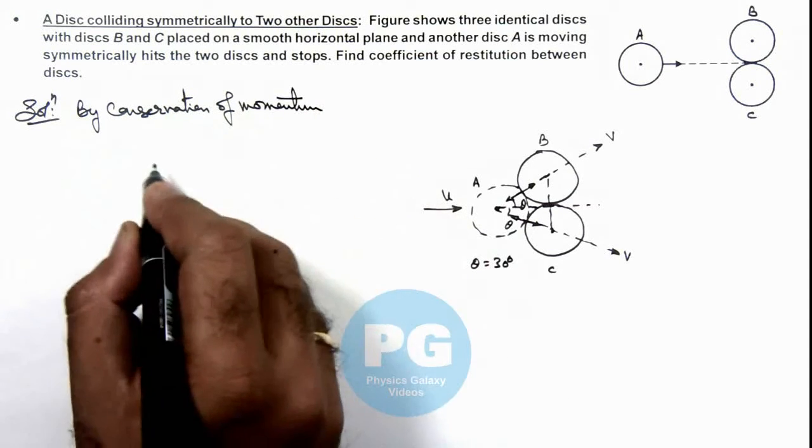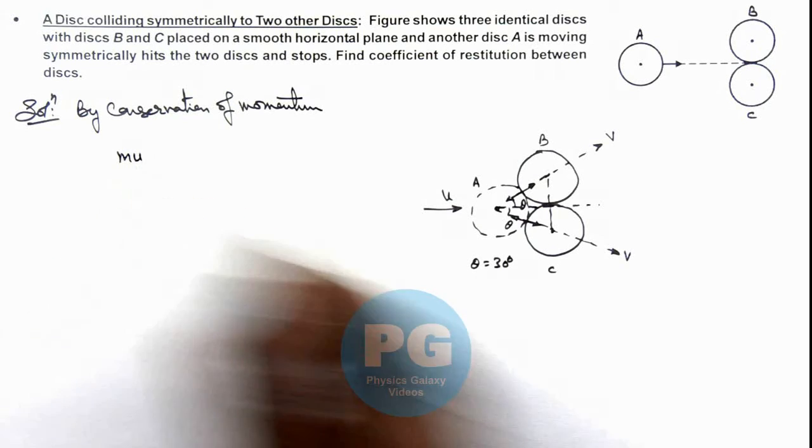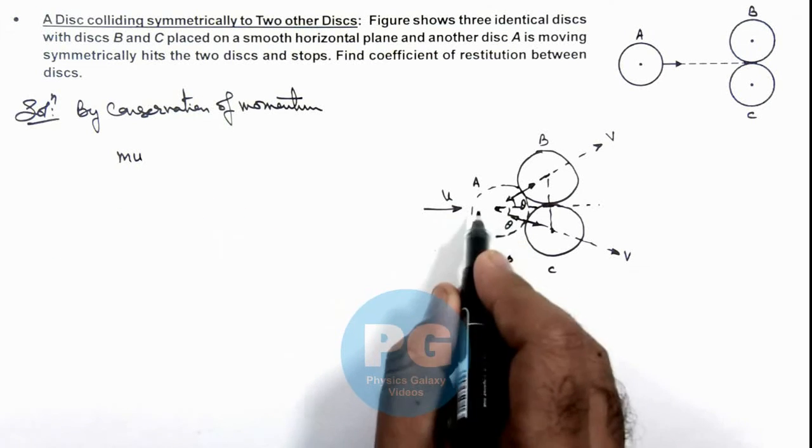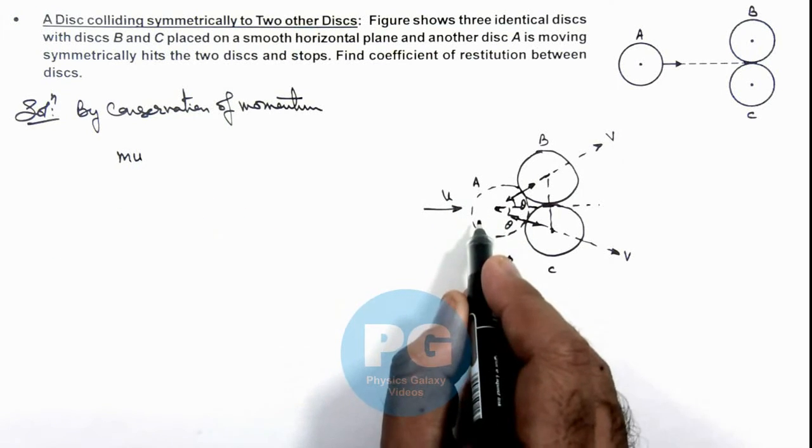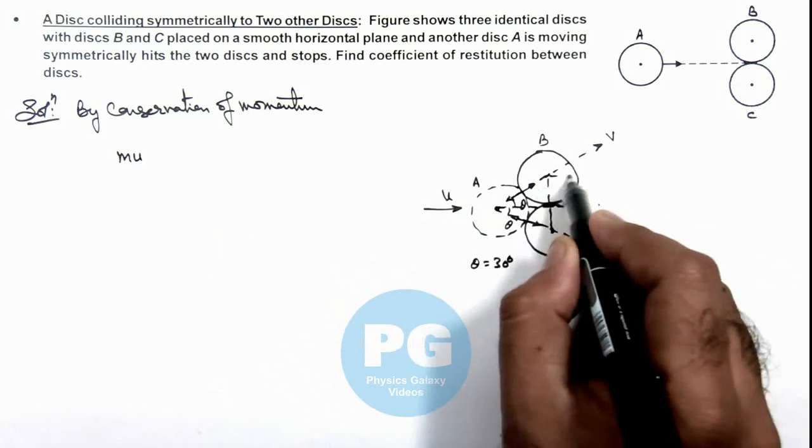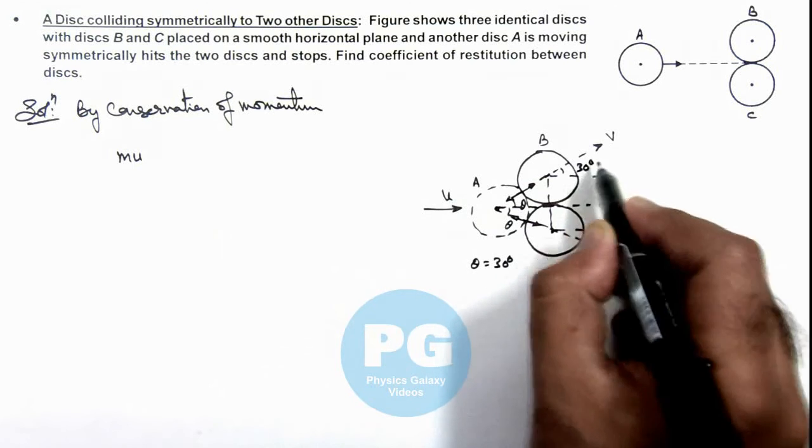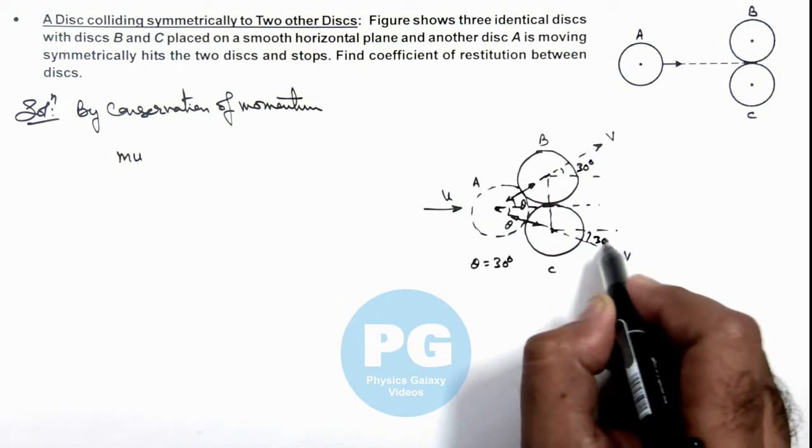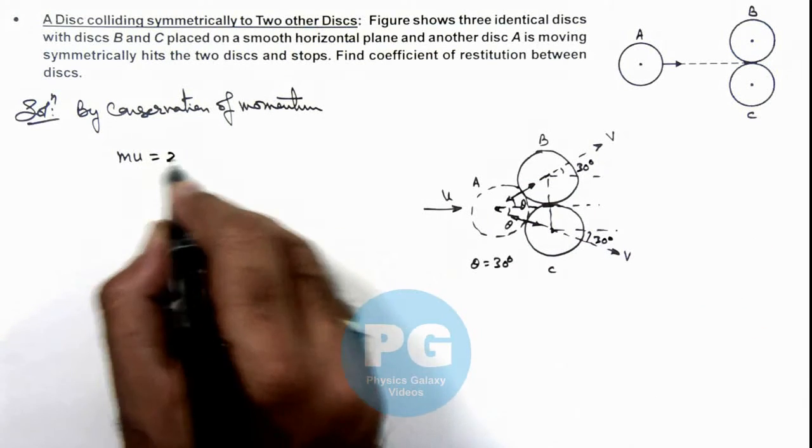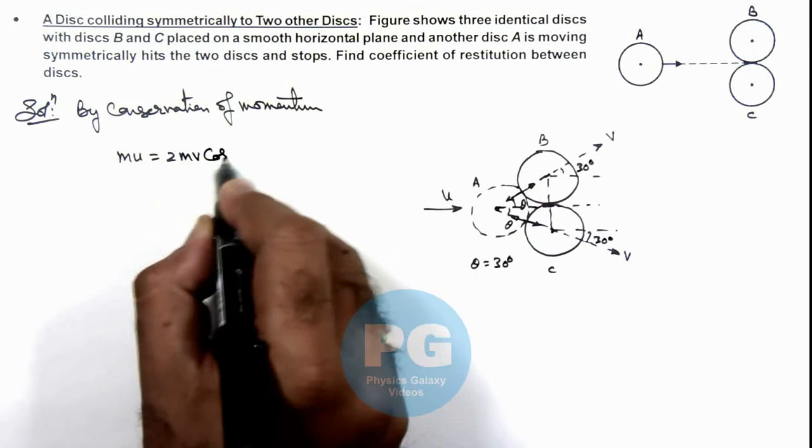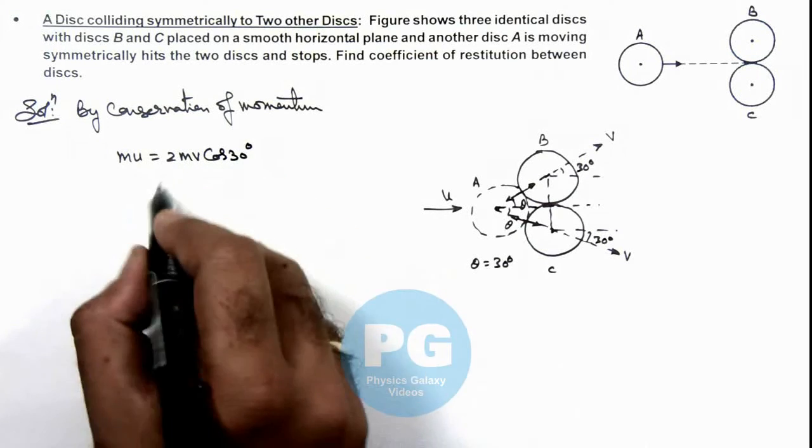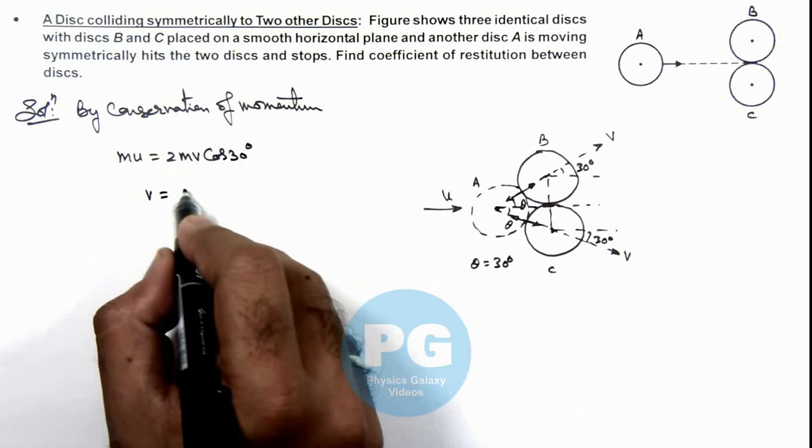In this situation, we can write the initial momentum of ball A was m*u. Finally, ball A comes to rest, so the horizontal momentum of these two balls can be given by m*v*cos(30) and m*v*cos(30), which is twice m*v*cos(30 degrees). Here, the value of v we are getting is u divided by root 3.